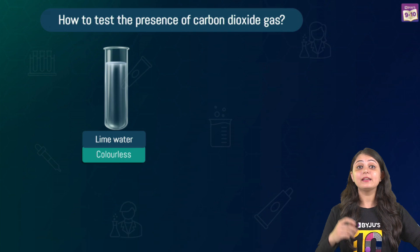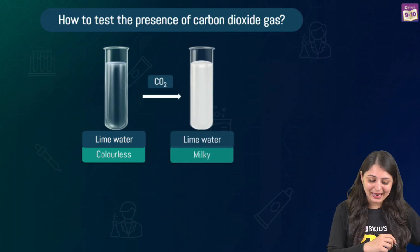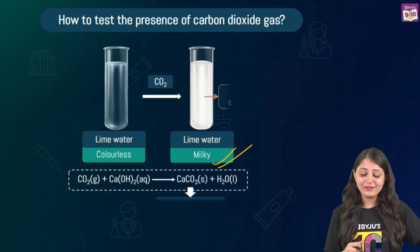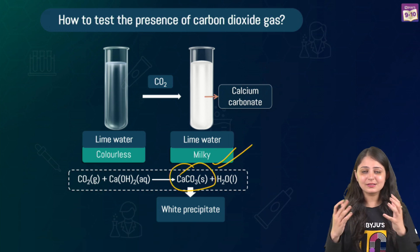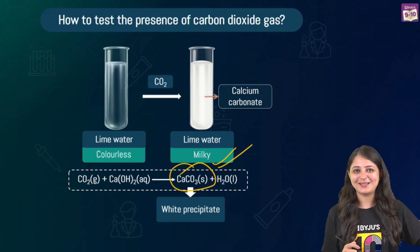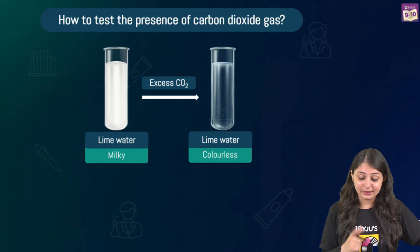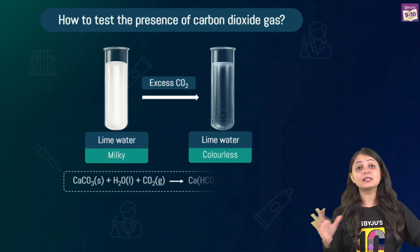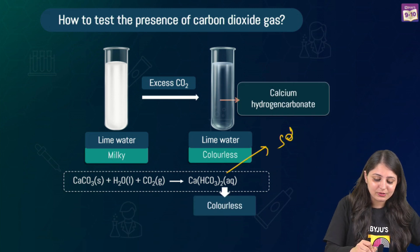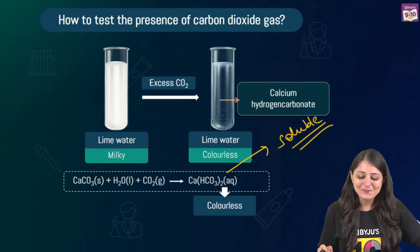We identify hydrogen gas by the pop sound. To identify carbon dioxide gas — when CO₂ is passed through lime water, it turns milky due to the formation of calcium carbonate, a white precipitate. This confirms the presence of CO₂. However, if you continue passing carbon dioxide, the milky color disappears because soluble calcium bicarbonate is formed.